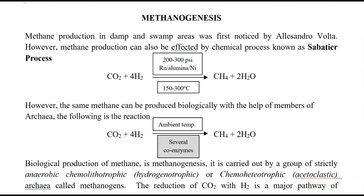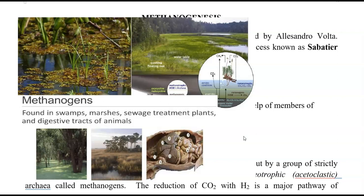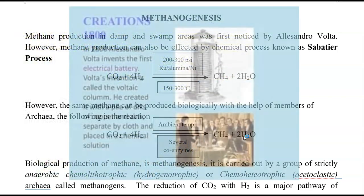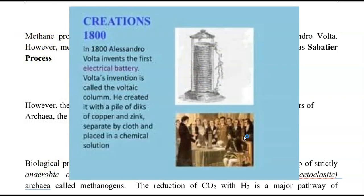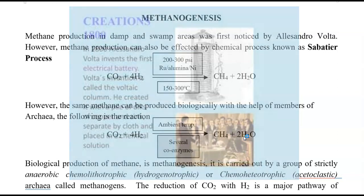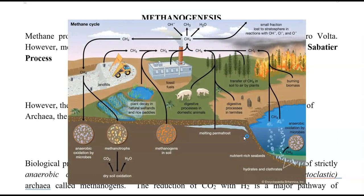What is methanogenesis? It refers to methane production, which is commonly produced in damp and swamp areas. It was first noticed by Alessandro Volta, who invented the voltaic cell or galvanic cell. This methane is produced by a biological process. In the top right-hand corner of the video, you can see a link to a Volta experiment conducted earlier — click that link to see how methane is produced in the natural environment.